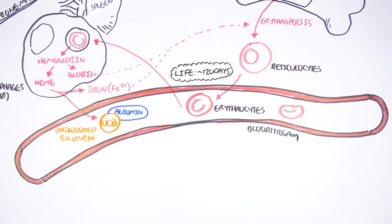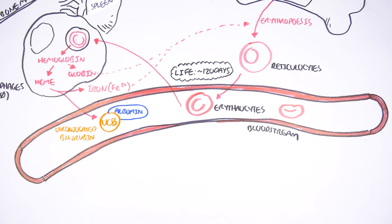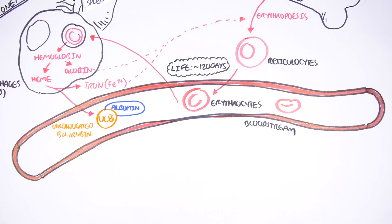The unconjugated bilirubin, however, is not recycled and needs to be removed by the body because it is toxic. The unconjugated bilirubin that is produced has a yellowish-orange color.